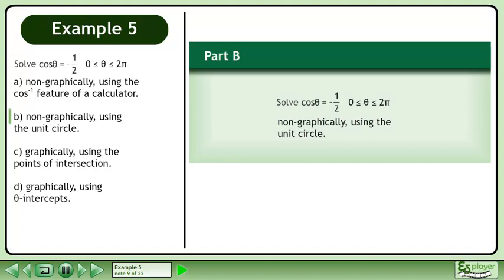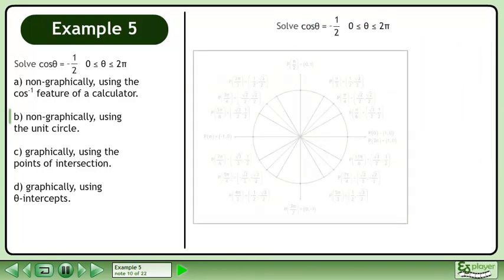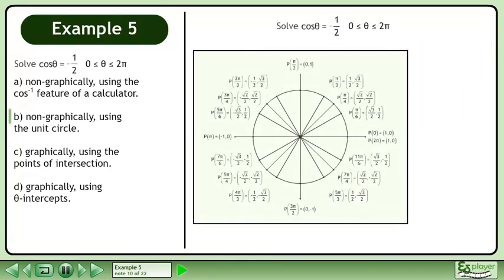In Part B, solve cos theta equals negative 1 over 2 non-graphically using the unit circle. Bring up the unit circle.